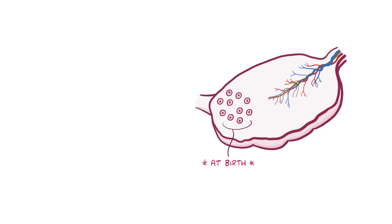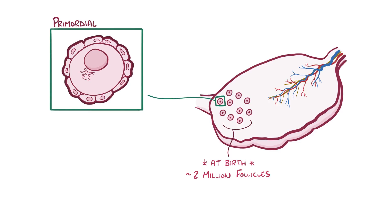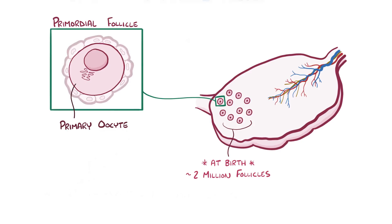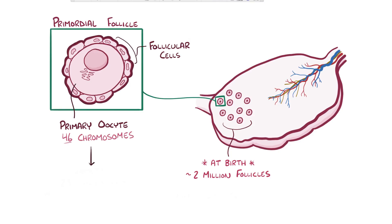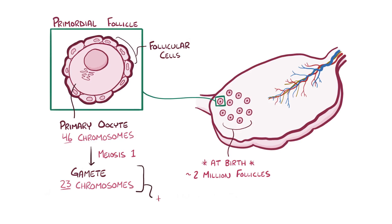At birth, the ovarian cortex has around 2 million follicles — roughly the population of Paris — and they're called the primordial follicles. Each primordial follicle has a single immature sex cell called the primary oocyte at the core, and a layer of follicular cells surrounds this. The primary oocyte has 46 chromosomes, but eventually it has to turn into a gamete with only 23 chromosomes. To do this, the primary oocytes have to complete meiosis I, and in a person's lifetime only about 400 successfully do that.